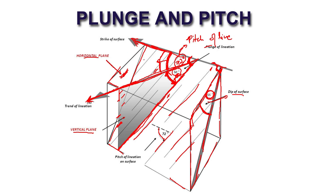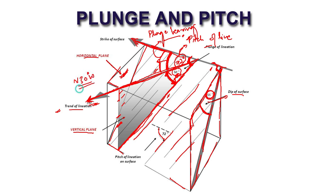The angle measured on the horizontal plane is the plunge bearing, also called the trend of the lineation. Here it is written as 30 degrees — so it's north 30 degrees west in this hypothetical image.